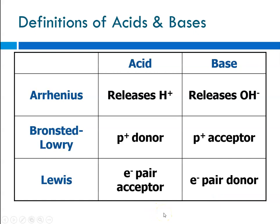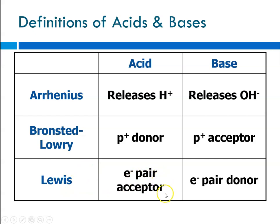Here is a summary of our three definitions. The Arrhenius definition: an acid releases hydrogen ions in aqueous solution and a base releases hydroxide ions. The Bronsted-Lowry definition: an acid is a proton donor and a base is a proton acceptor. The Lewis definition: an acid is an electron pair acceptor and a base is an electron pair donor. That is it for part two of acid and base definitions. This is Mrs. Augustine signing off.